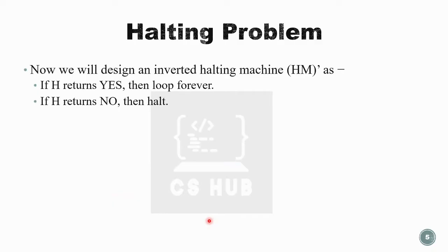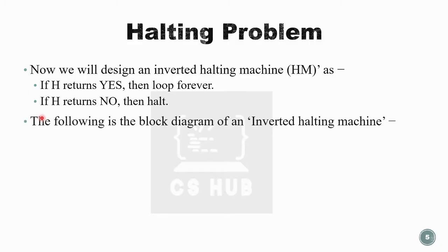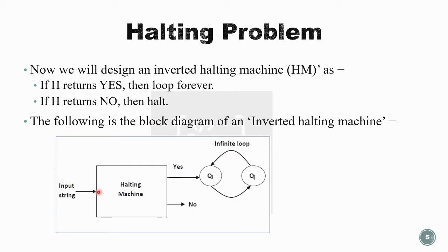In the next step, we design an inverted halting machine, called HM'. HM' is built using the halting machine HM but reverses its outputs. If HM produces yes, HM' goes into an infinite loop forever. If HM produces no — meaning the machine does not halt — then HM' will halt. So HM' inverts the behavior: yes becomes loop forever, and no becomes halt.